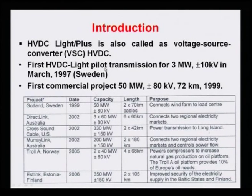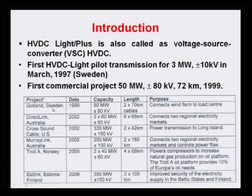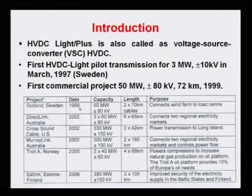The first commercial HVDC Light project came into practice in 1999, carrying 50 MW at ±80 kV. This is the Gotland, Sweden project — Gotland is an island approximately 70 kilometers from the mainland. The project was commissioned in 1999 with a power capacity of 50 MW and voltage level of ±80 kV, making it bipolar. A sea cable was used — two cables, one positive and one negative — connecting wind energy to the load center on the island.